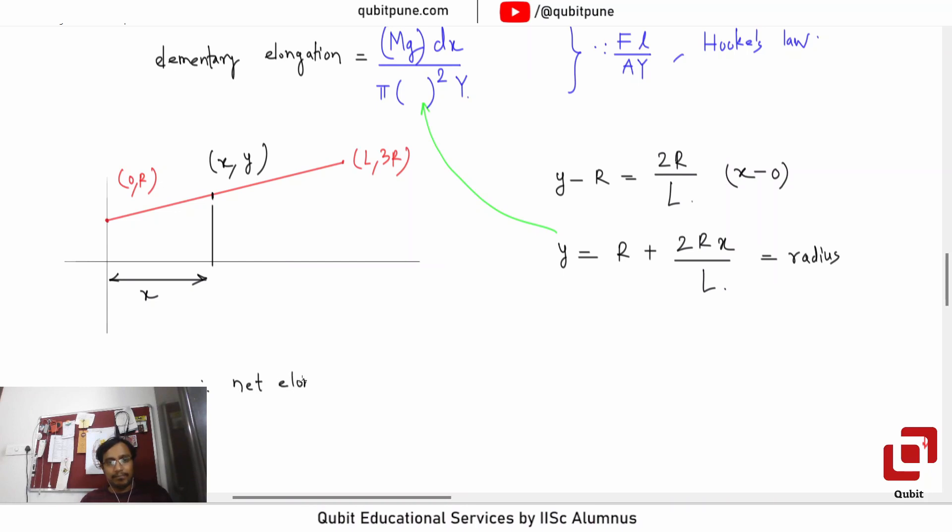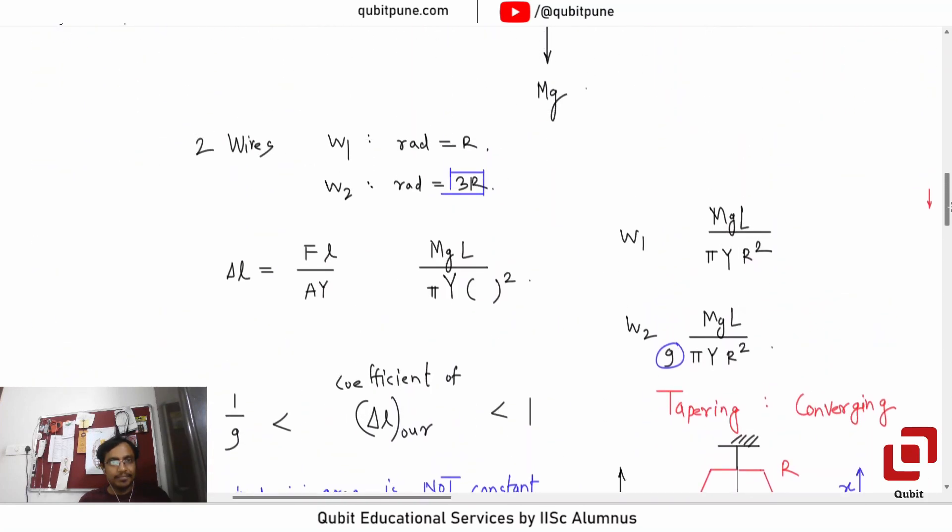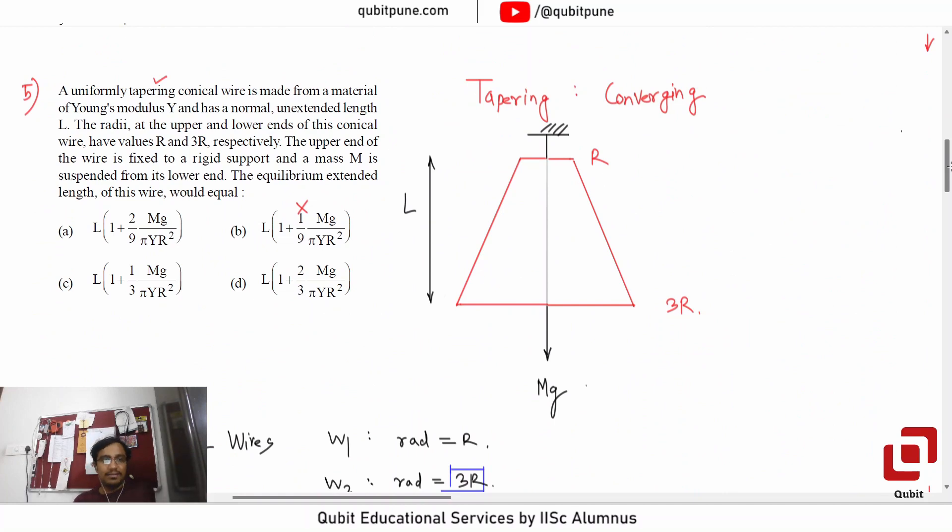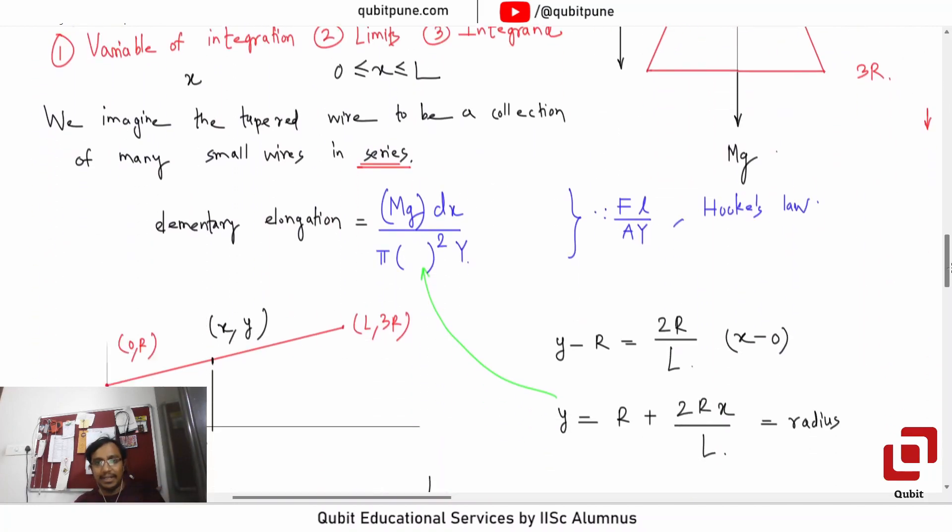Therefore, net elongation will be integral as x goes from 0 to L: Mg by pi Y. I am deliberately writing this part separately and we can take R squared here. So it will effectively be 1 upon (1 plus 2x by L) the whole squared dx. Do we have Mg upon pi Y R squared? Yes, and we know that we will somehow also get that L.